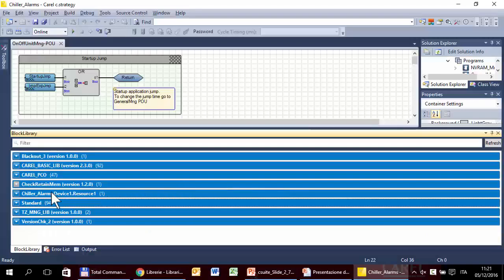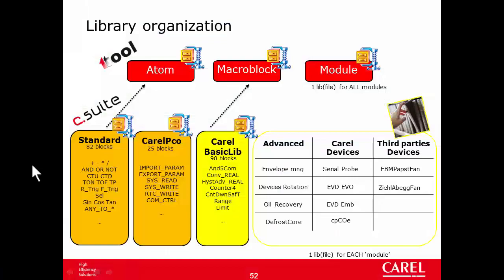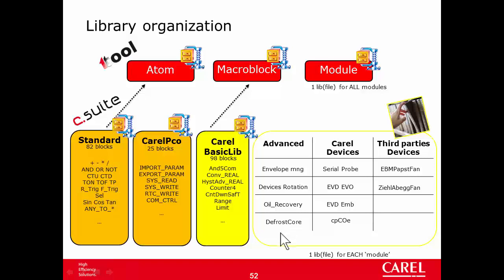This is the chiller alarm. Here is the Standard library, the Karel Pico library, the Karel Basic Lib library. And then we have a multitude of libraries that we have logically divided into three categories: Advanced, Karel Devices, and Third-Party Devices. The Advanced category contains libraries for specific devices or functions, like a function block to manage the envelope and oil recovery of compressors, a function block for the rotation of devices — compressors, pumps, fans, whatever else — a library containing a block to manage the defrost in heat pump applications, and so on. Later we will see that there are others.